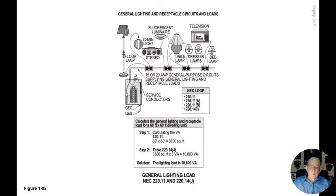We will review in Stallcup's Test Taking Made Easy the procedure used to determine the number of branch circuits based upon this 10,800 VA as we move on through the upcoming illustrations. Figure 1-2 simply deals with finding the VA rating for the general lighting and receptacle loads in accordance with NEC 220.11 and 220.14.